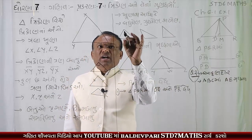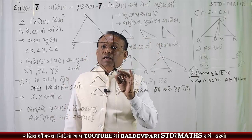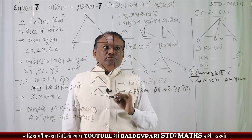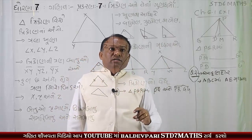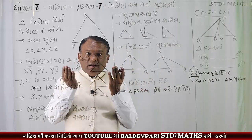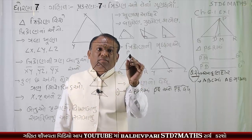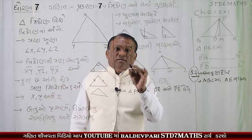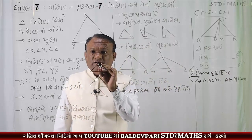ખૂણા પ્રમાણે જોઈએ તો: લઘુ કોણ - બધા ખૂણા નેવું (90°) કરતા ઓછા હોય. ગુરુ કોણ - એક ખૂણા નું માપ નેવું (90°) કરતા વધારે હોય. ત્રિકોણ ની મધ્યગા - જ્યાં દોર નાખ્યો ત્યાં એની મધ્યયગા બને છે.